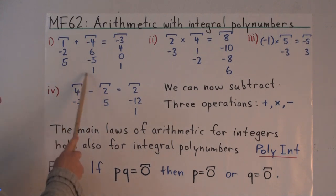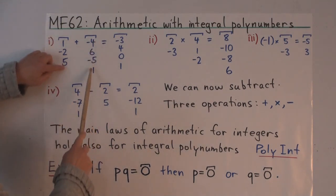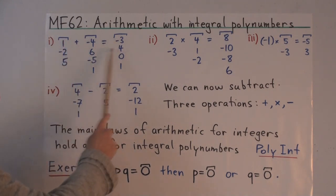Here's how we add two integral polynumbers, just the way we add ordinary polynumbers. Each entry or coefficient is done separately.